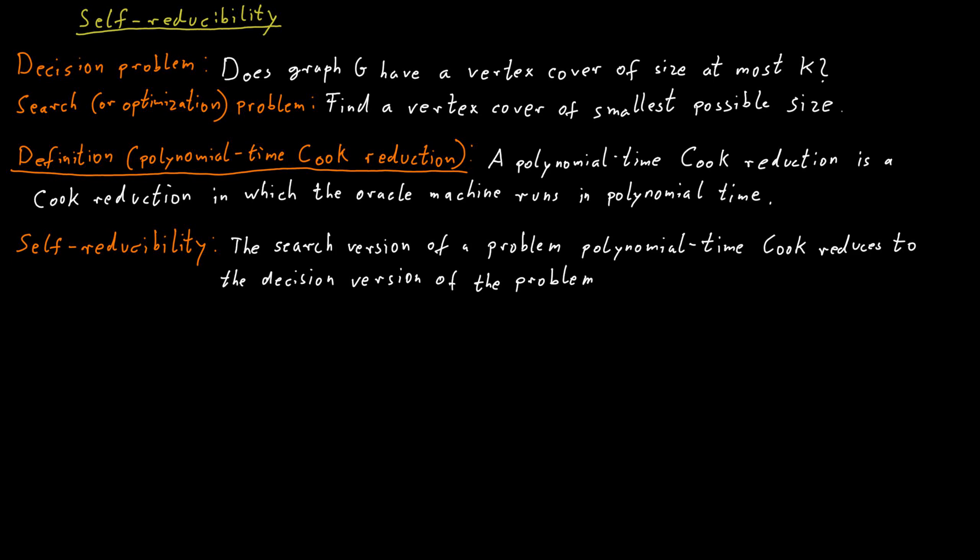And what this means is that if we can solve the decision version of the problem efficiently, we can also solve the search or optimization version of the problem. We just take the search version of the problem and then apply the Cook reduction and use the algorithm that we have that is efficient for the decision version as this sub procedure that the oracle calls. So really, the search problems are not really harder than the decision problems.